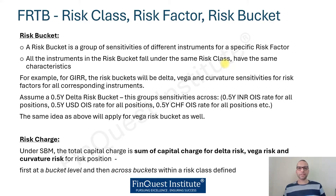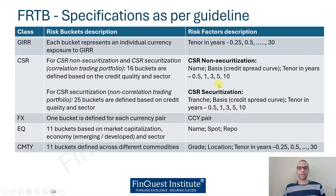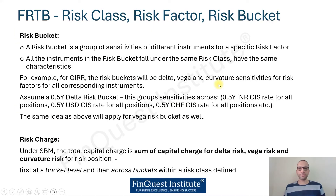Delta is the sensitivity for a small change in the underlying price. Vega is the sensitivity to a small change in the underlying volatility. Curvature risk goes one step beyond delta risk — whereas delta assumes a very small change in the underlying, curvature risk sensitivity attempts to capture a larger change in the level of the underlying.